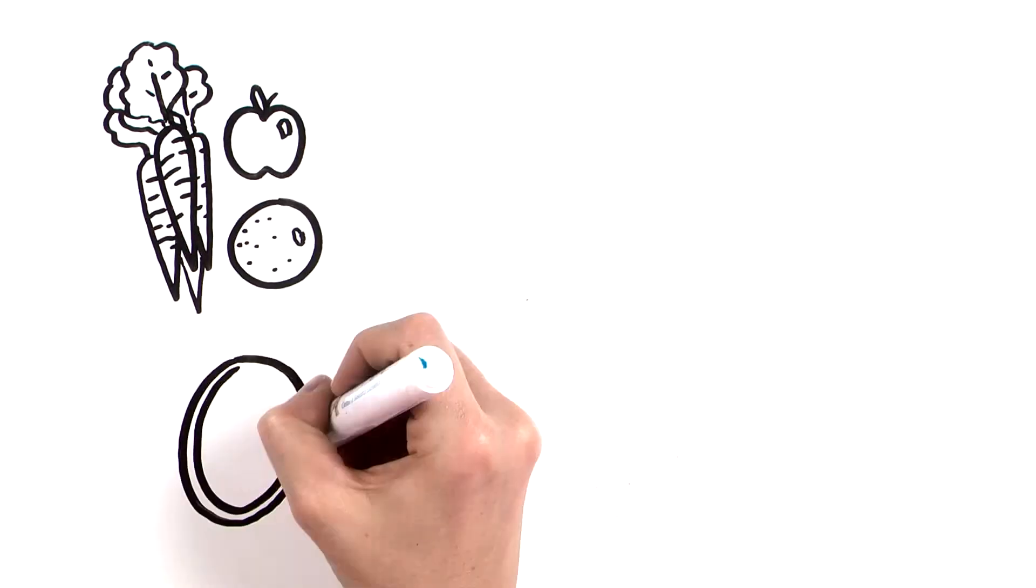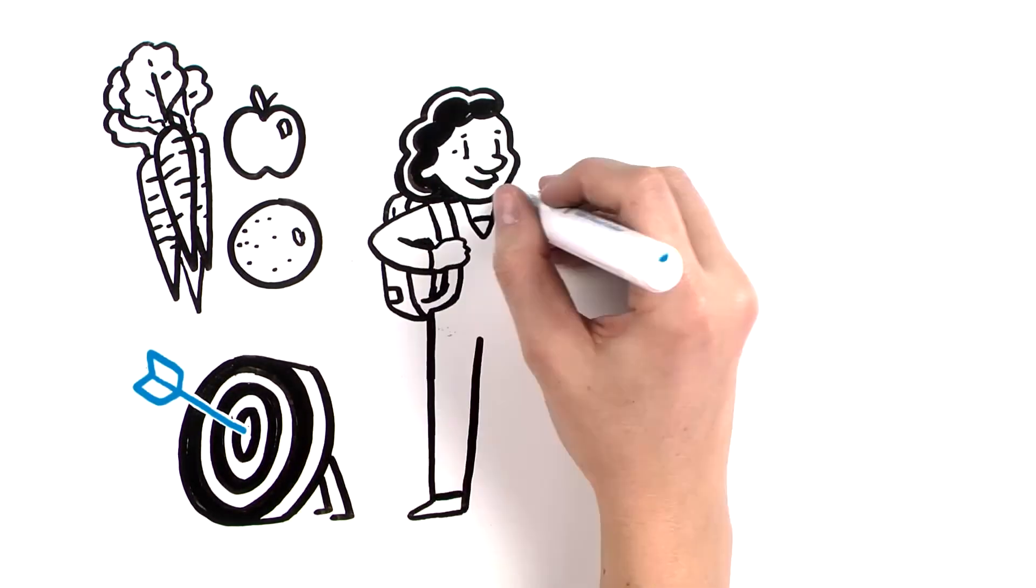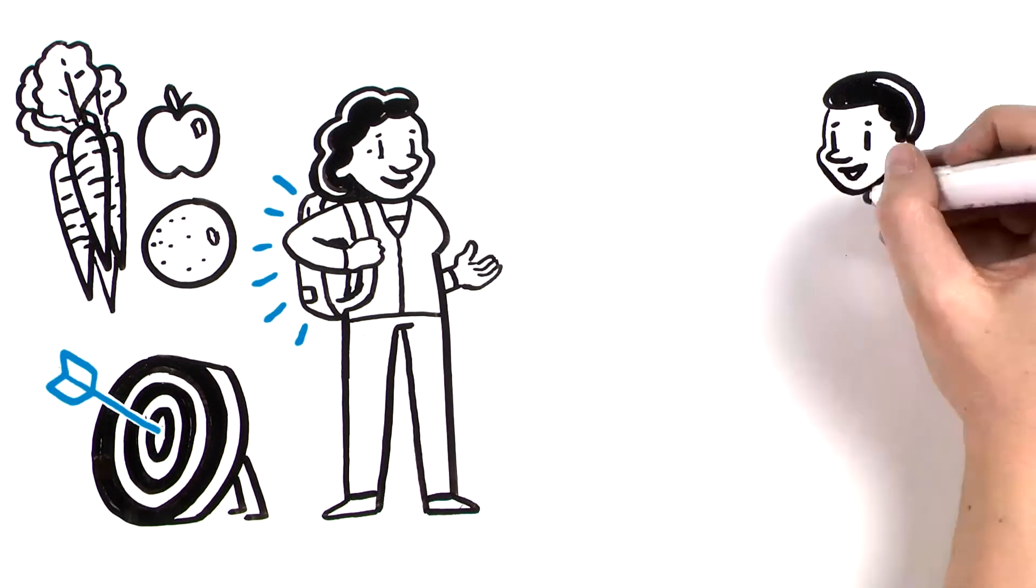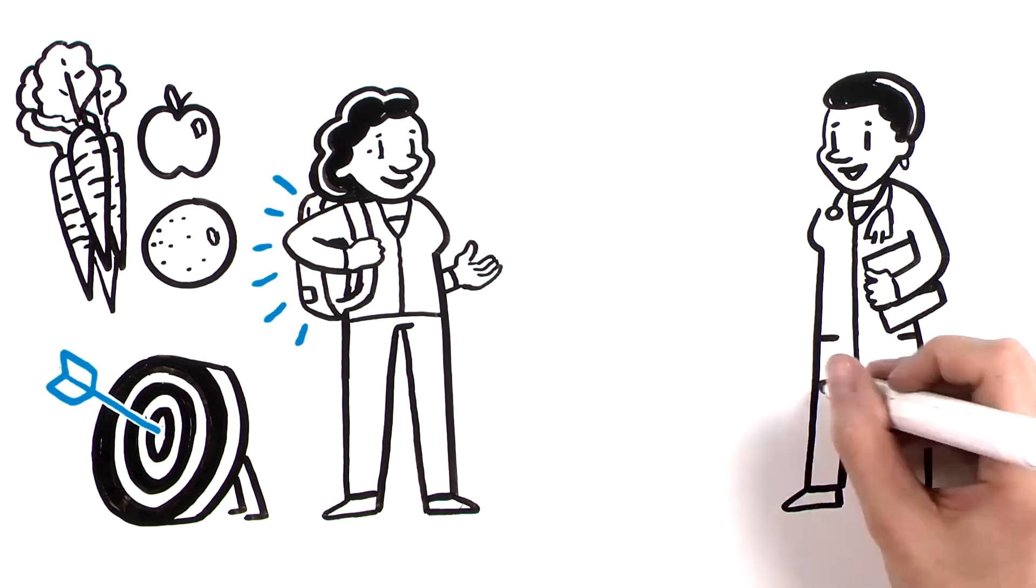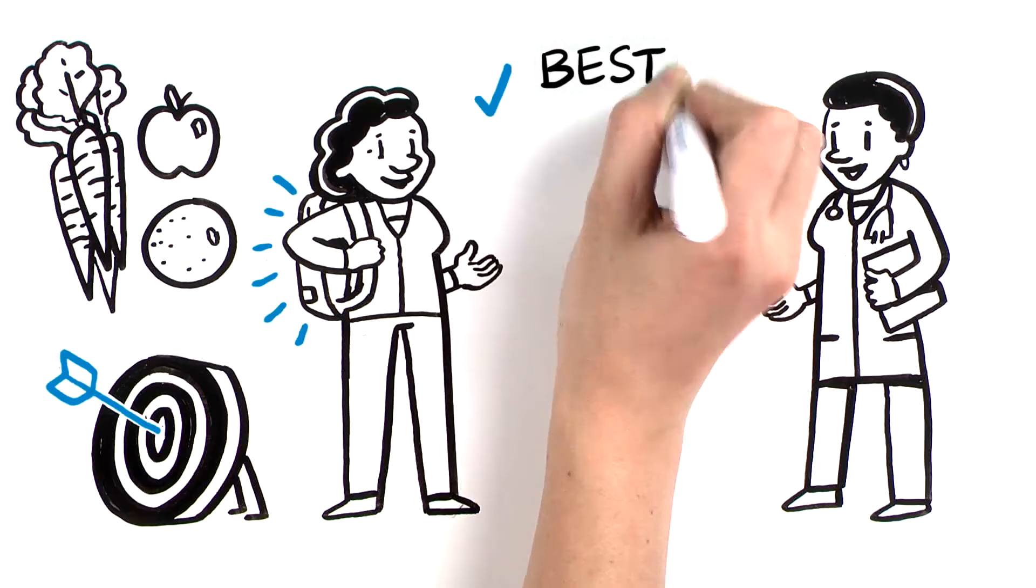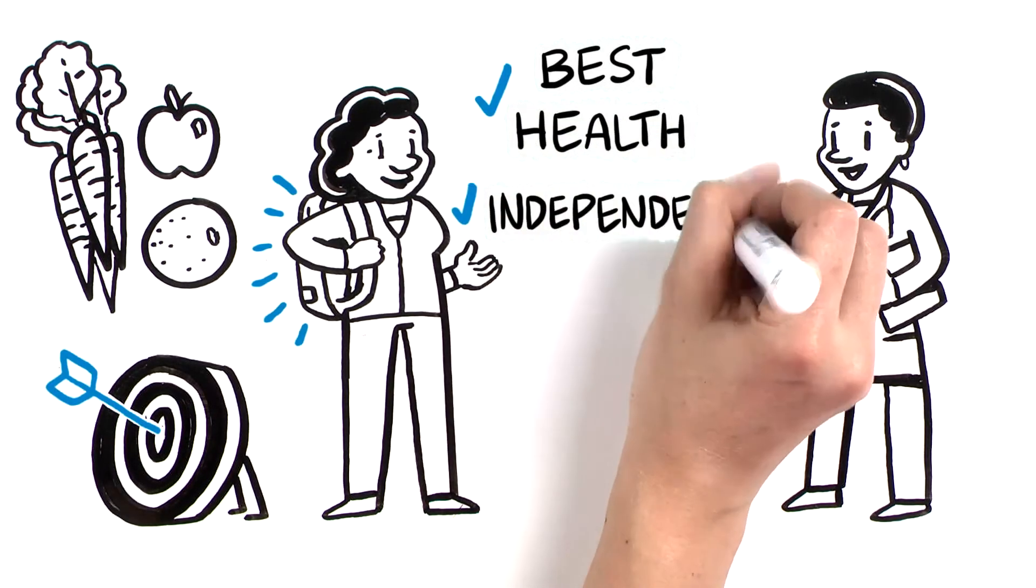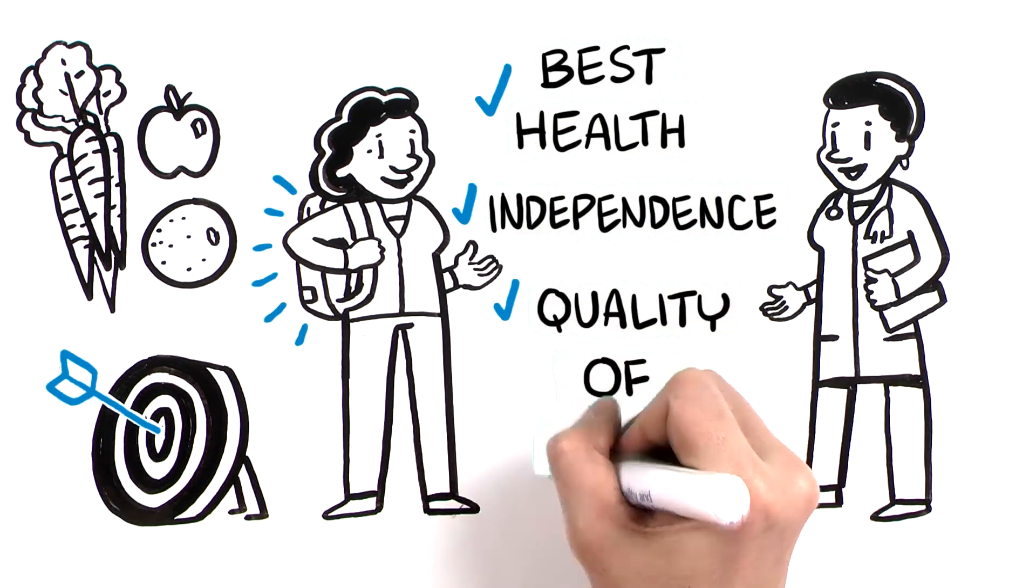Having good habits and setting targets allows you to lighten your frailty load. The earlier you recognize and act on frailty, the better the chances of achieving your best health, keeping your independence, and enjoying quality of life for longer.